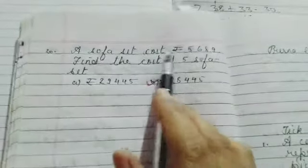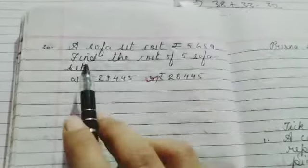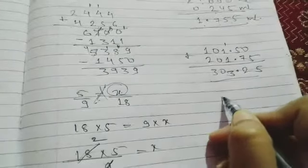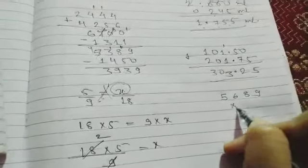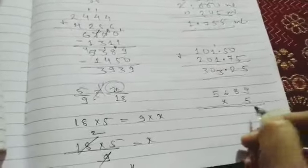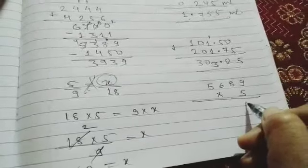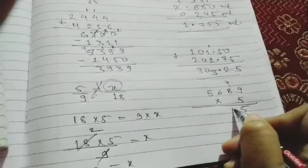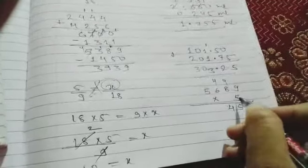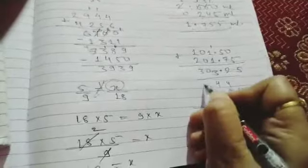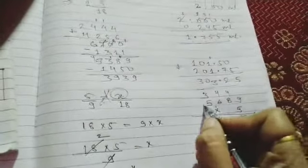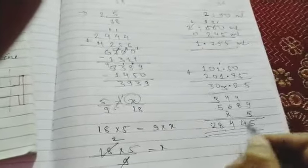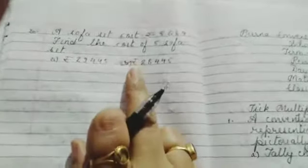A sofa set cost rupees 5,689. Find the cost of 5 sofa. So we have to multiply. So 5, 6, 8, 9. And how many sofas we have to purchase? 5. So it multiplied by 5. So 5 nines are 45. 5 carry 4. 5, 8 is 40. And 4 is 44. Carry over 4. 5, 6 is 30. And 4 is 34. Carry 3. 5 fives are 25. 26, 27, 28. So answer will be 28,445. So our answer is part B.